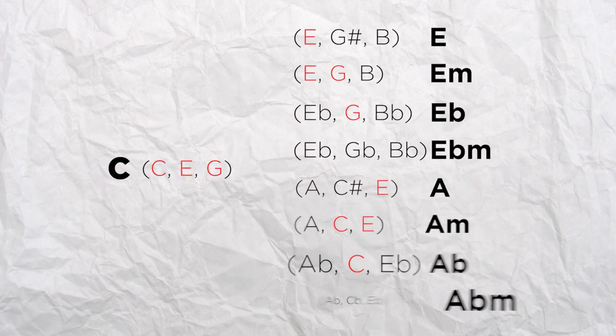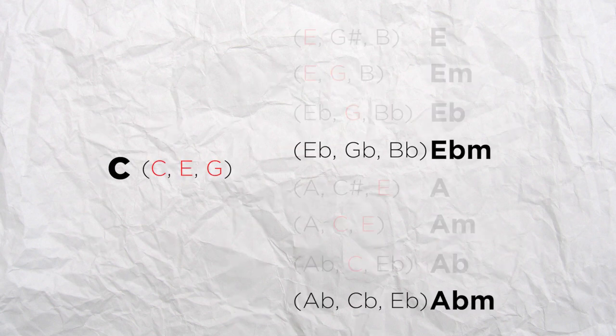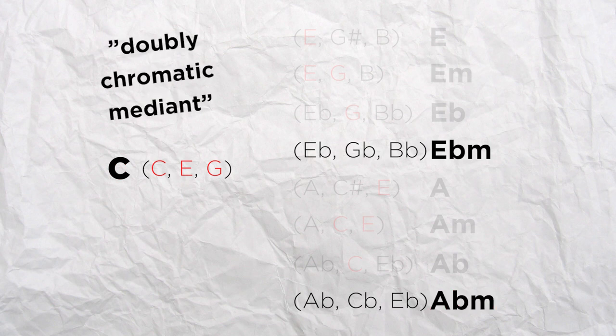Then we have chords that have no tones in common with C major. These are the Eb minor and the Ab minor. They are called doubly chromatic mediants and can sound a lot more dissonant, so they can be less easy to use, but they can also be very colorful nonetheless.